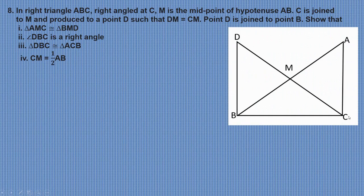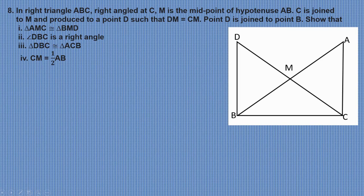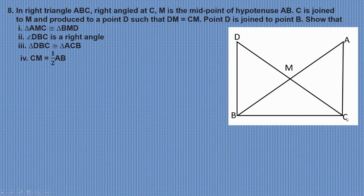In right triangle ABC, right-angled at C, M is the midpoint of hypotenuse AB. C is joined to M and produced to D such that DM equals CM. Point D is joined to point B. We need to show: triangle AMC is congruent to triangle BMD, angle DBC is a right angle, triangle DBC is congruent to triangle ACB, and CM equals half of AB.